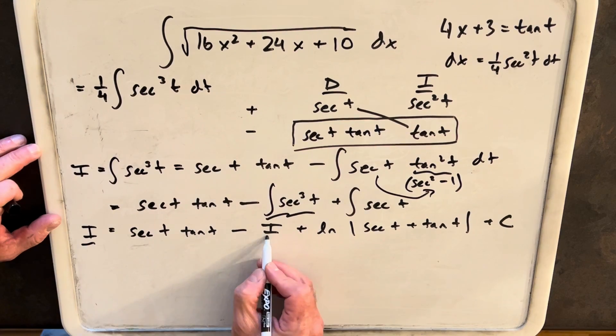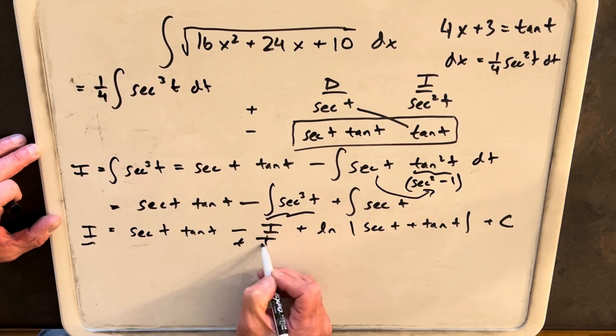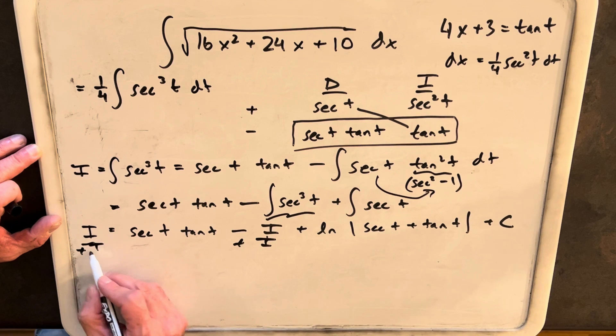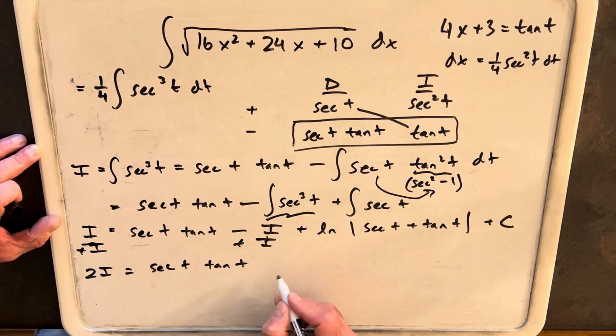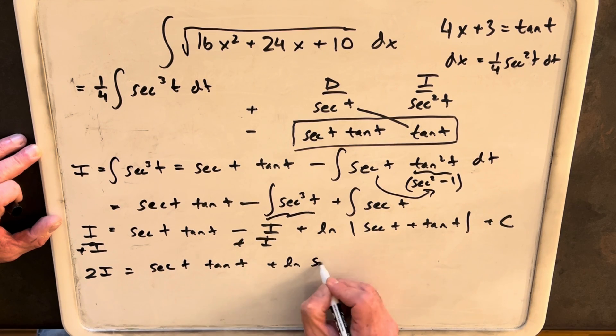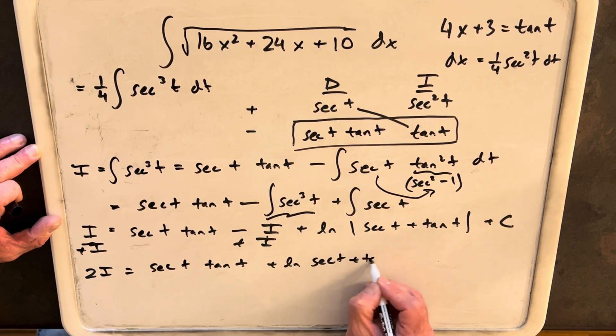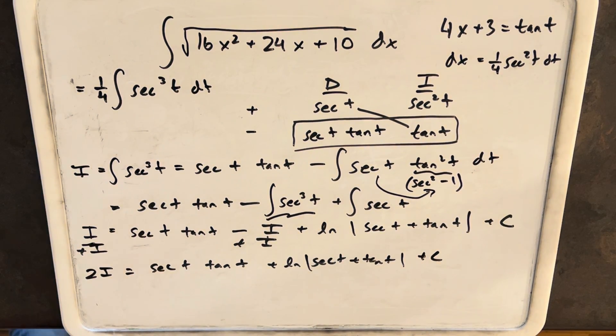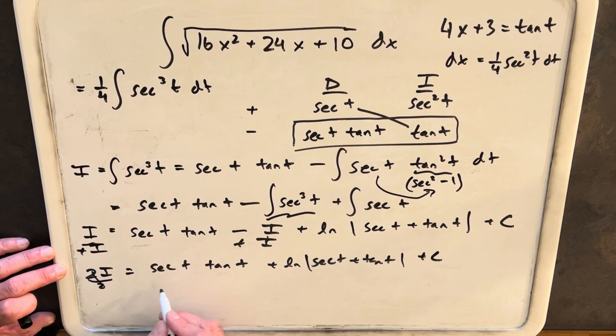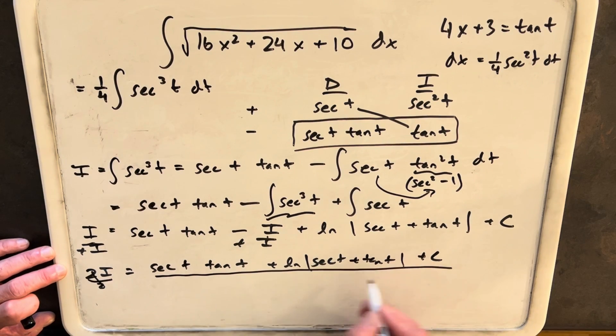Then for the last step, let's just add this on both sides. We'll just add this here. And we're going to say 2i equals secant t tan t plus ln secant t tan t plus c. But then we'll just divide out our 2 and we'll have this whole thing over 2.